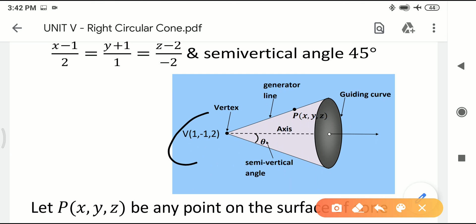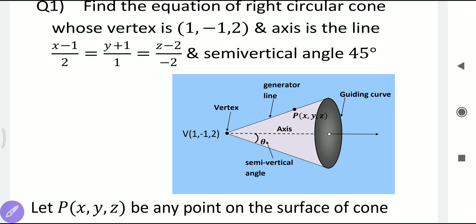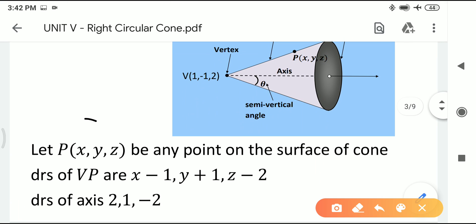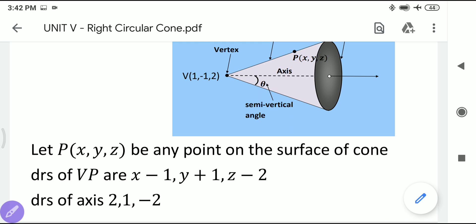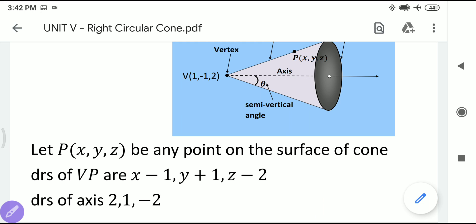In this problem we have everything: the vertex, the DRs of the axis, and theta = 45°. To find the equation, take an arbitrary point P(x, y, z) on the surface of the cone. The DRs of line VP are found by subtracting coordinates: x−1, y+1, z−2.